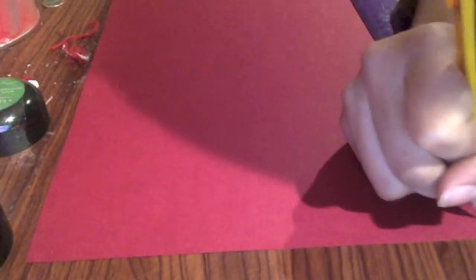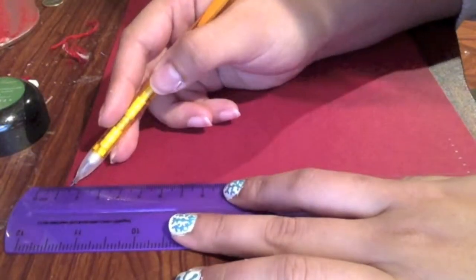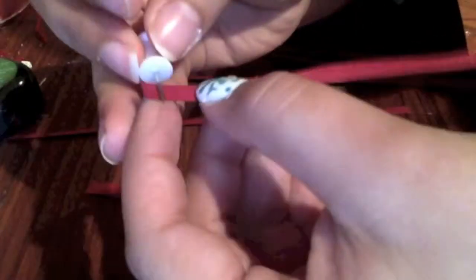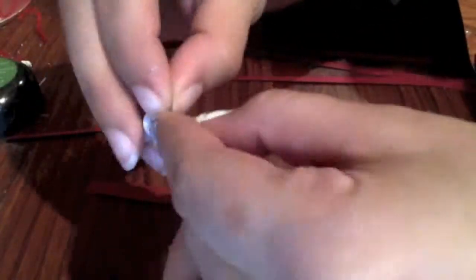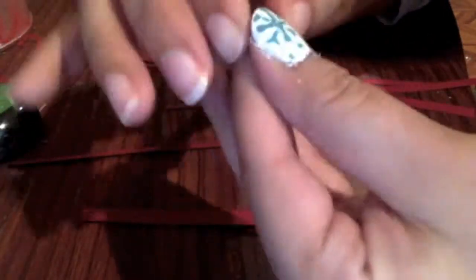Once we have the individual strips, we're going to roll them all around our thumbtack. This is going to help you just start it off, so then we're going to continue rolling with your other fingers once we have started it off.